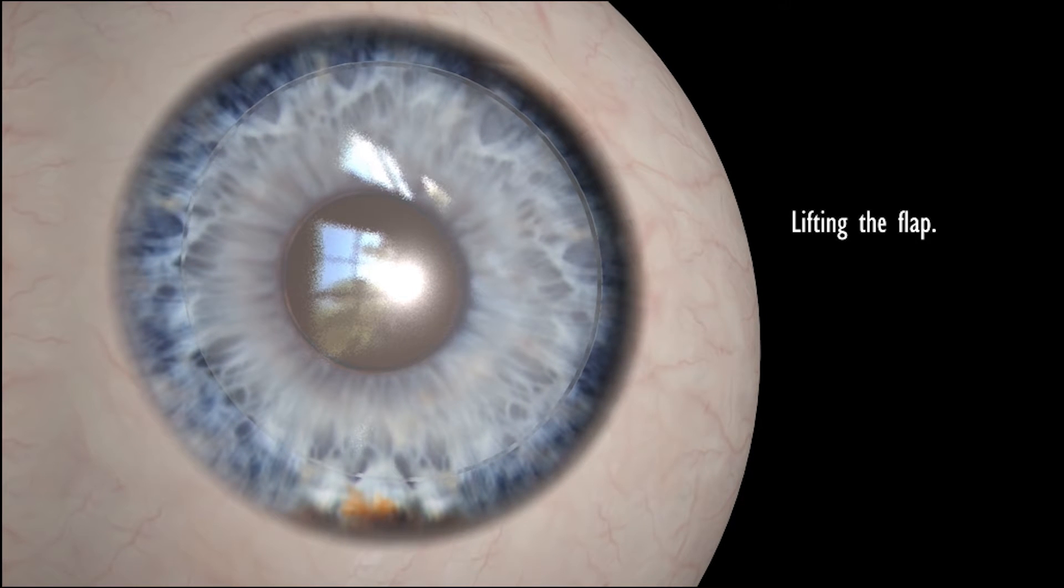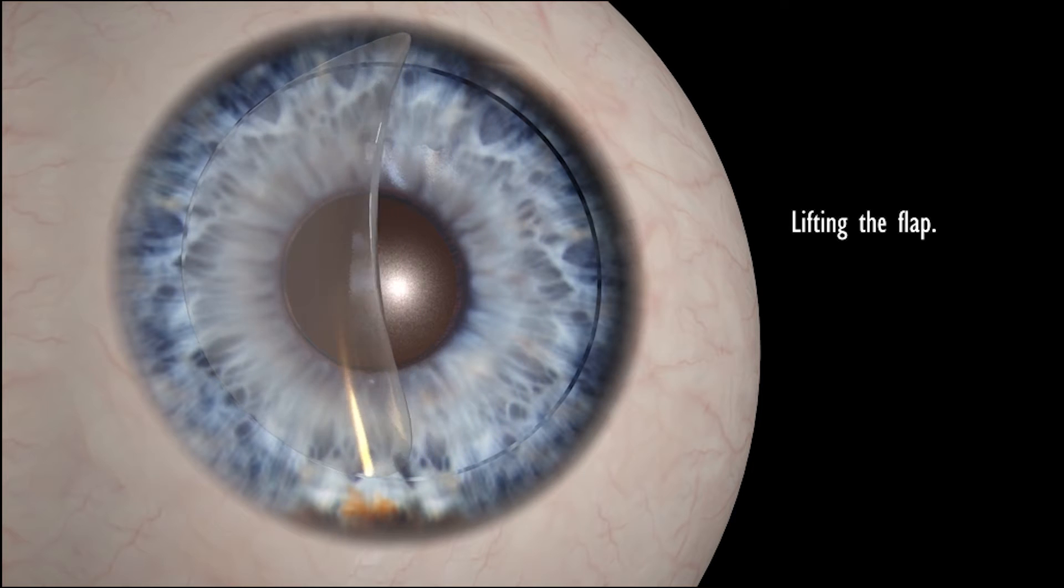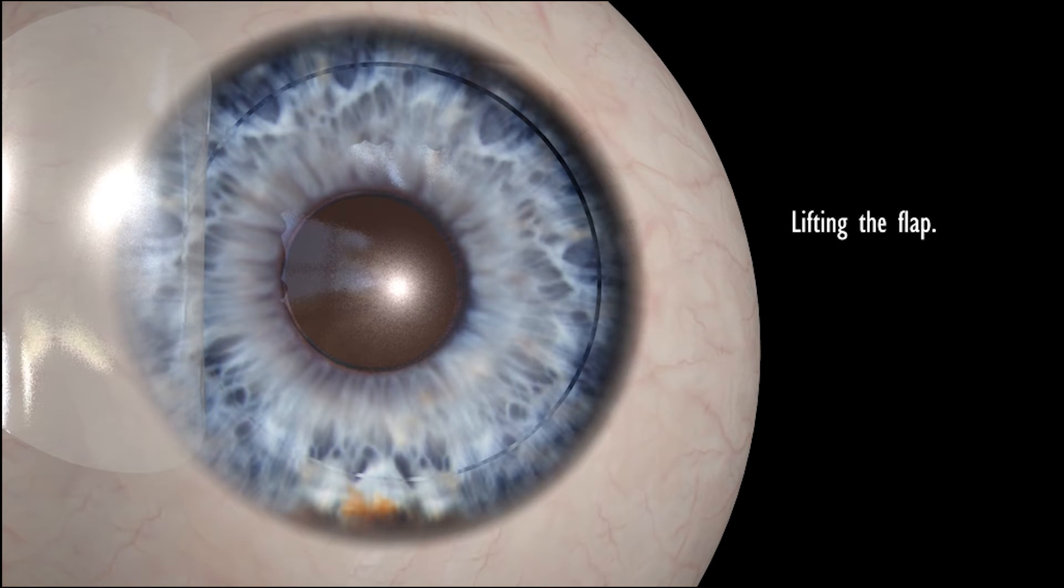Once the layers of the cornea are separated, the flap, remaining hinged on one side, is then lifted back, uncovering the stroma, or middle section of the cornea.